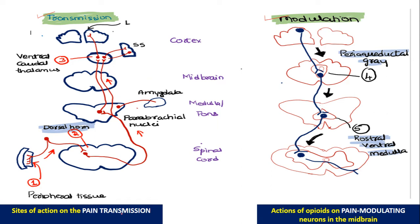In the pain transmission pathway, Morphine acts on the transmission pathway from periphery to the central sites. It has a direct action on the peripheral tissue where it inhibits the sensitivity to tissue injury or damage. It also inhibits transmission through the dorsal horn of the spinal cord, inhibits transmission from the thalamus to relay centers like somatosensory and limbic cortex, and inhibits the projection of signals from the parabrachial nucleus to the amygdala.